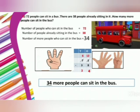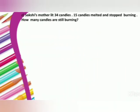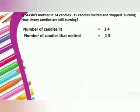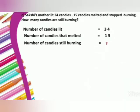Now let's move to the next slide — the third question. Sakshi's mother lit 34 candles. 15 candles melted and stopped burning. How many candles are still burning? So how many candles were there? 34. How many candles melted and stopped burning? That is 15. We have to find out how many candles are still burning.